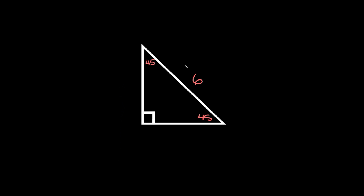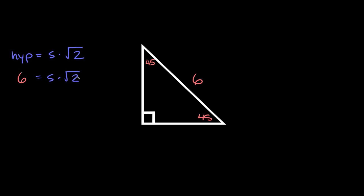Here is the next example. We're rotating the triangle again, and this time we're given the hypotenuse — it's 6 — and we have to figure out what the two legs are. We can use the formula that the hypotenuse equals one of the sides times root 2. We know the hypotenuse is 6, so 6 equals one of the sides times root 2. To solve for a side, we divide both sides by the square root of 2, so that side equals 6 over the square root of 2.